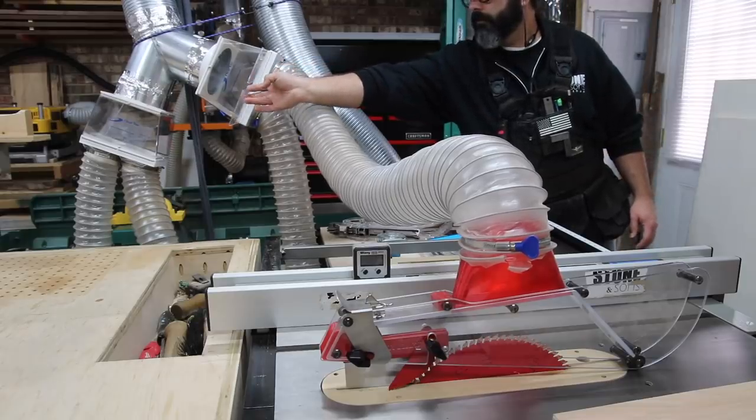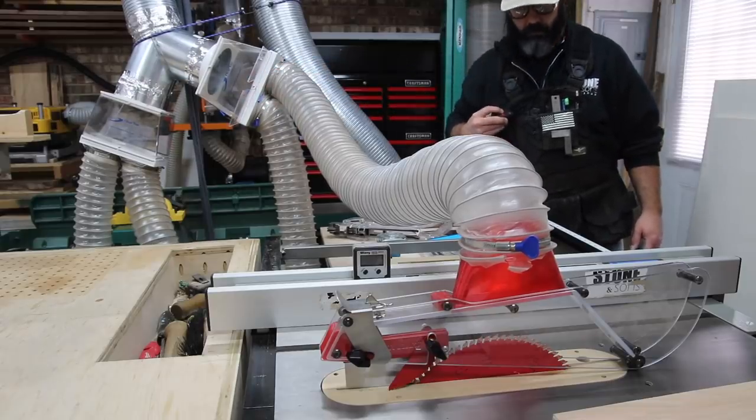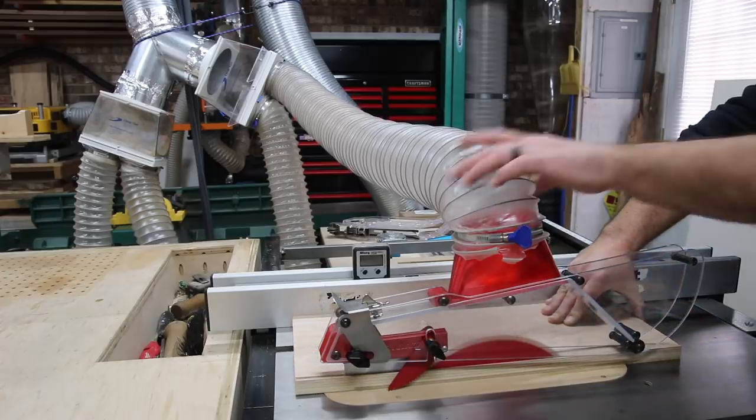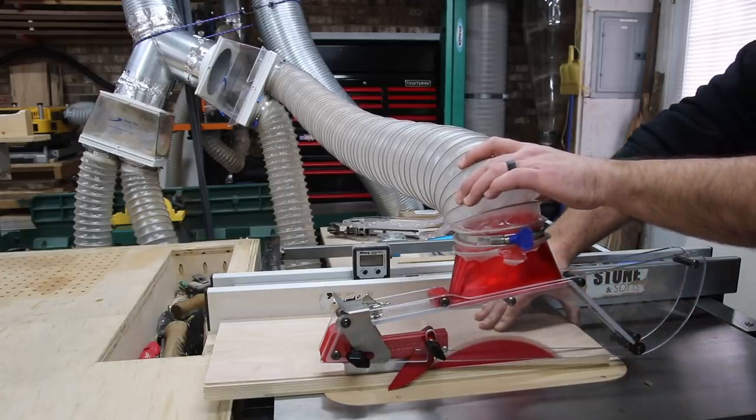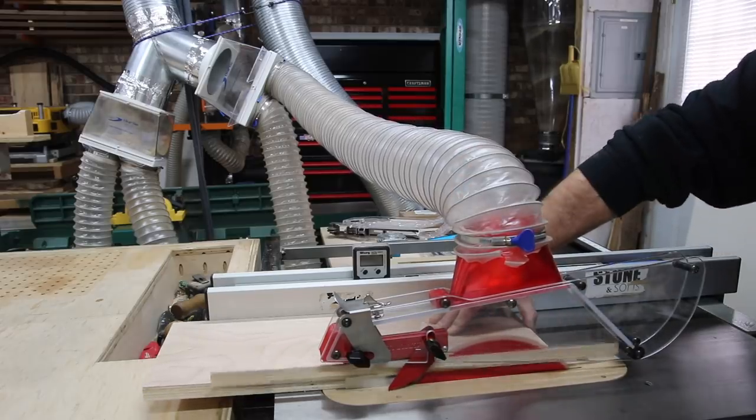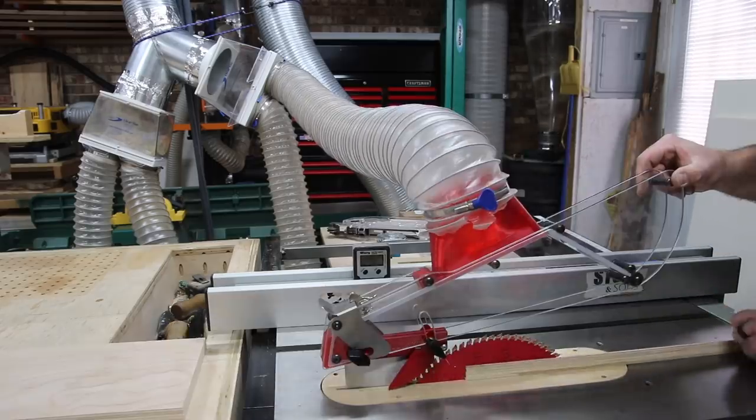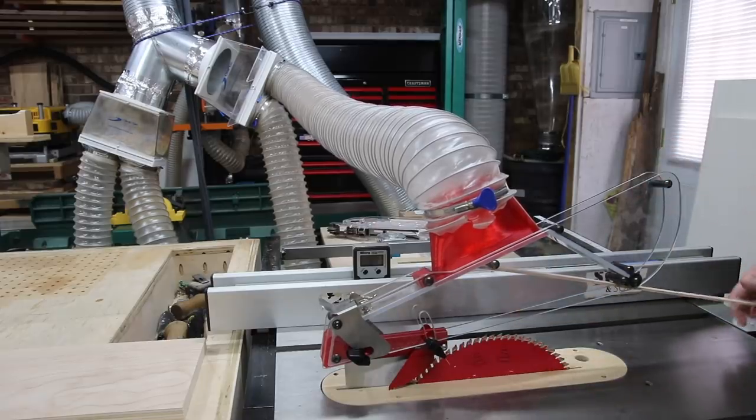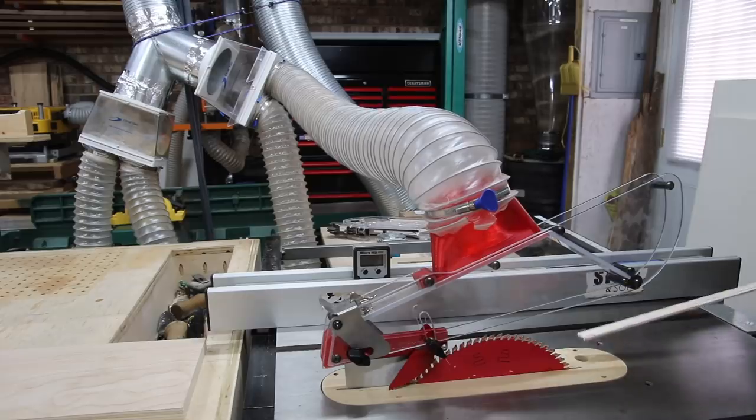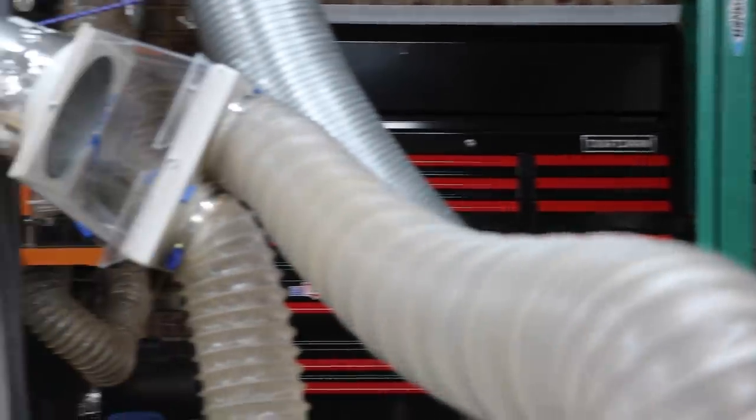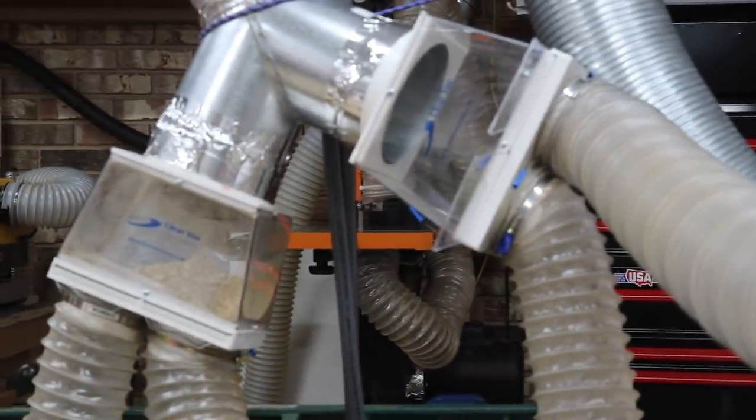Now here at the table saw, I've added a shark guard. It's an overarm four inch dust port that fits over the blade. I've got to do a little bit of modification here because the weight of the hose wants to pull that little guard over a little bit, but that's no big deal. I've got plans for that and I'll make another video and be sure to share it, but look at the suction here. You can see that strip of wood is just being, I mean, it's got a lot of suction there.